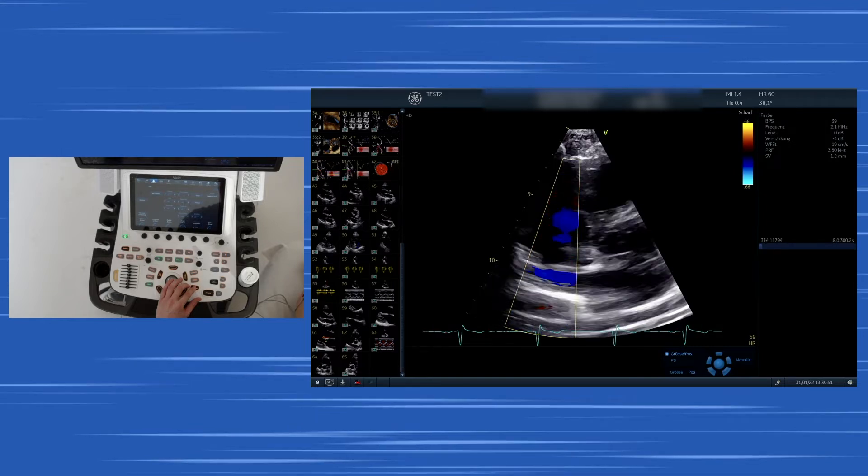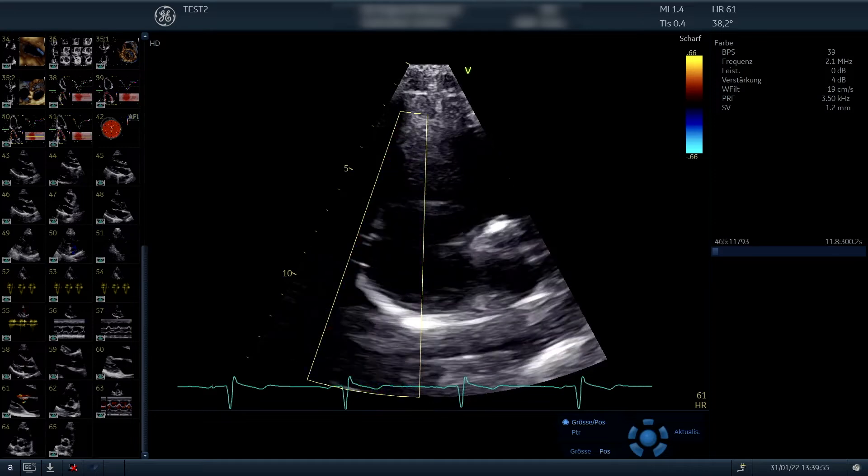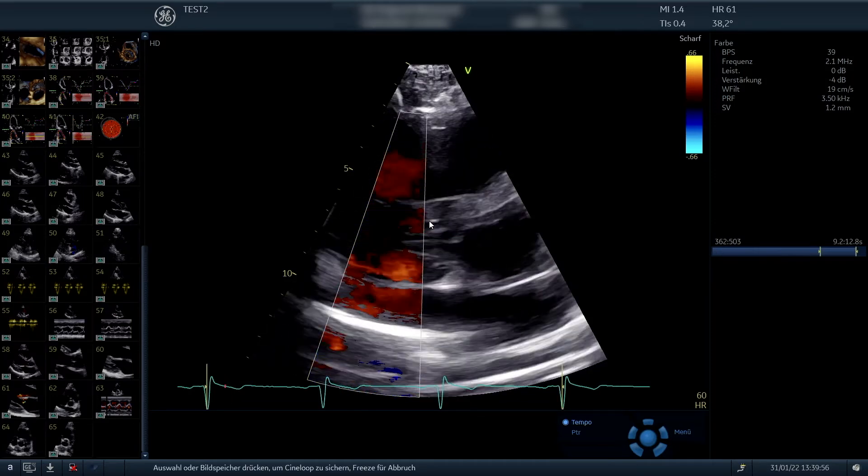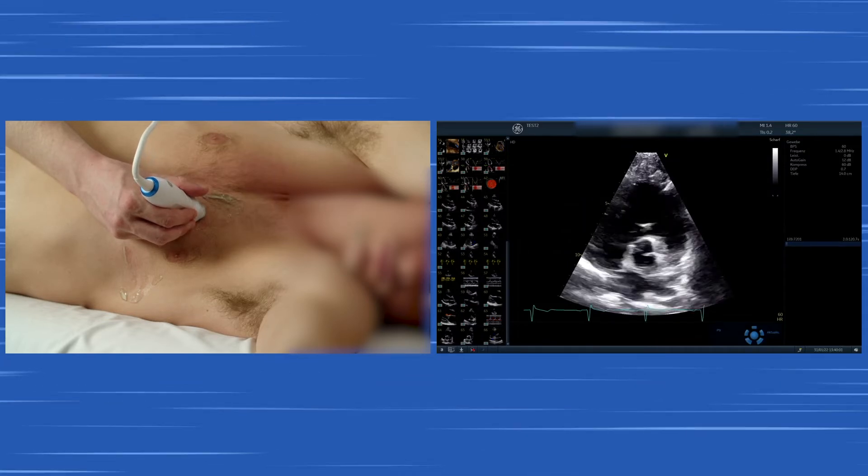You see that there is flow inwards the right atrium. That's the inferior vena cava. And you can also denote that flow is going towards the interatrial septum, but there is no turbulent flow.